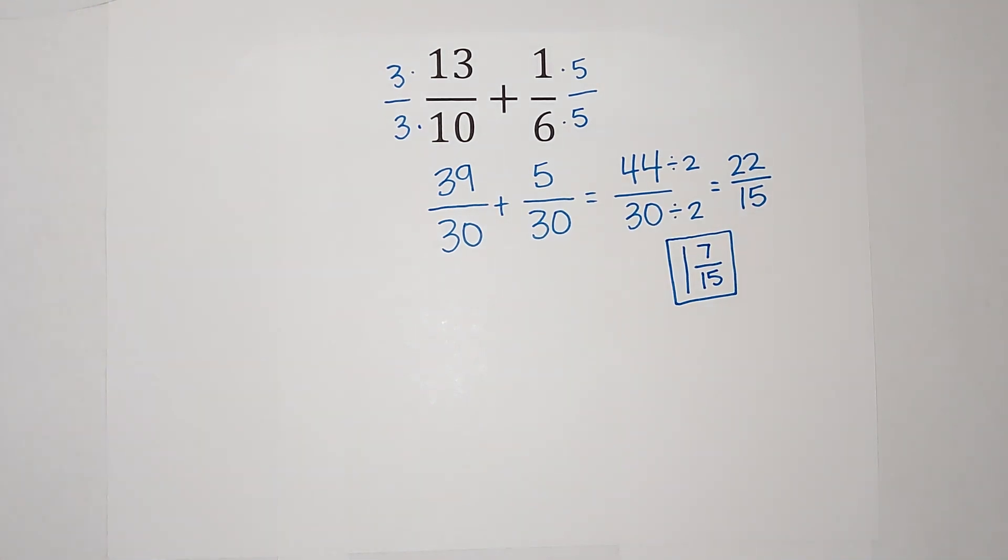So 13 tenths plus one sixth gives me one and seven fifteenths. Hopefully that makes sense. Thanks, bye!